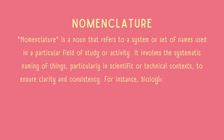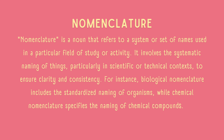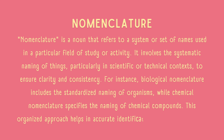For instance, biological nomenclature includes the standardized naming of organisms, while chemical nomenclature specifies the naming of chemical compounds. This organized approach helps in accurate identification and communication.